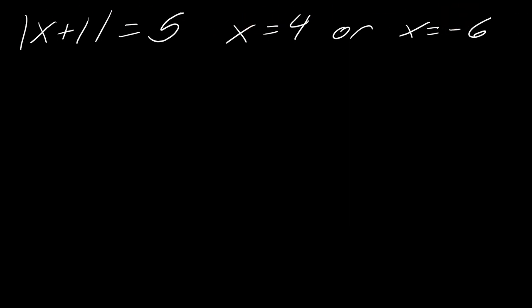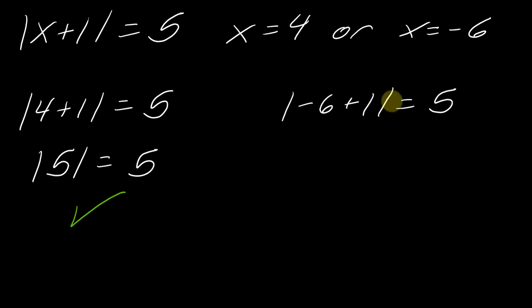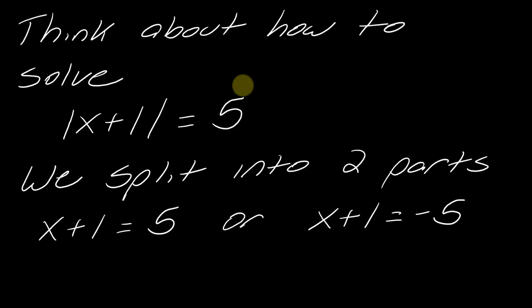Here's what's interesting. Plugging in four, I get the absolute value of five, which equals five — that checks out. Now plugging in negative six, this becomes negative five inside the absolute value. The absolute value of negative five is five, so that also checks out. This is not a coincidence. The reason we split into the two parts — five and negative five — is because we know if we take the absolute value of negative five, it comes back out to five. That's why we split into two parts.